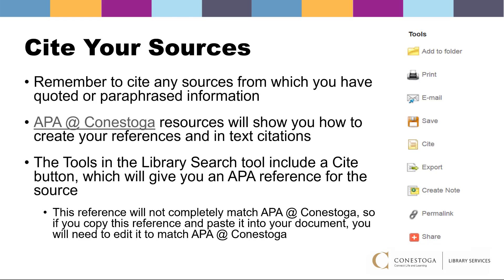The APA at Conestoga resources will show you how to create your references and in-text citations. The tools in the library search tool include a cite button which will give you an APA reference for the source. However, this reference will not completely match APA at Conestoga, so if you copy and paste it into your document, you'll still need to edit it.